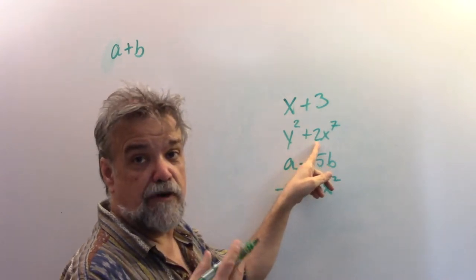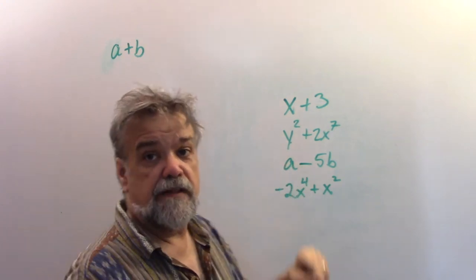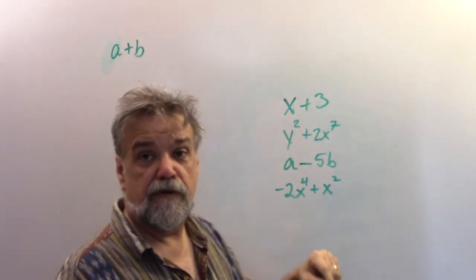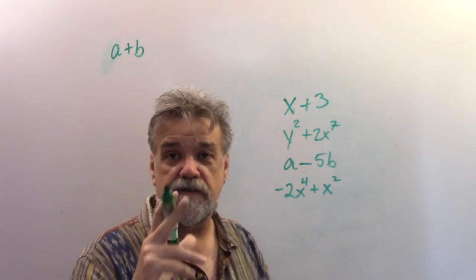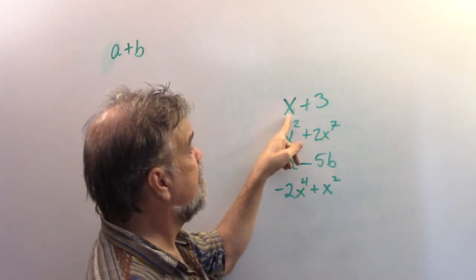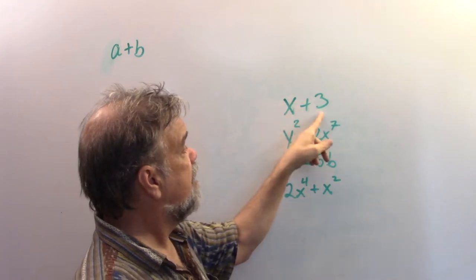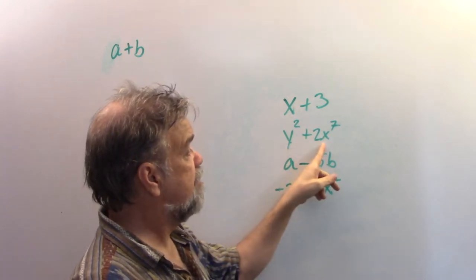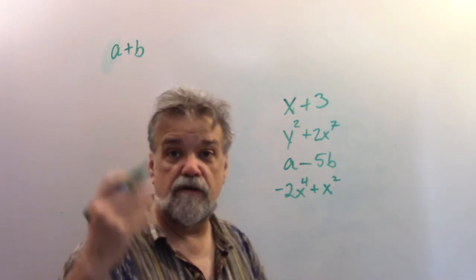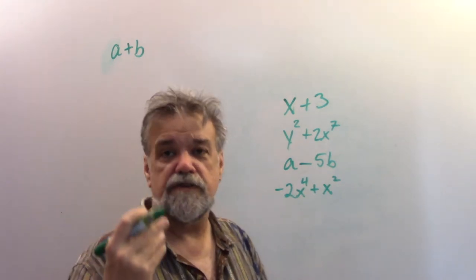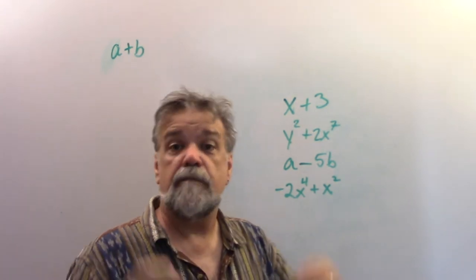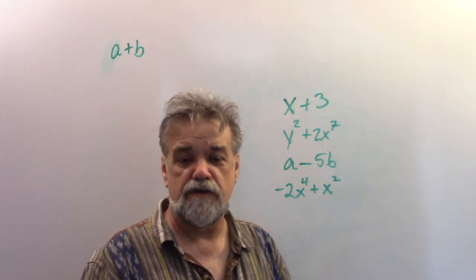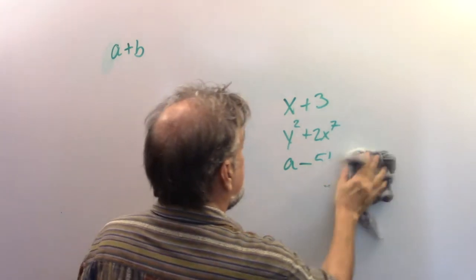There's always a coefficient — that's the number part — and there's always a variable taken to a power that is zero or greater, always an integer power. For example, it would be 1 times x to the first, or 3 times x to the zero. A polynomial is a string of many such terms, and a binomial is specifically a string of two of those.